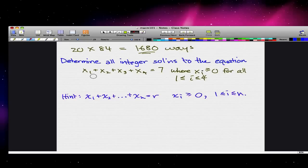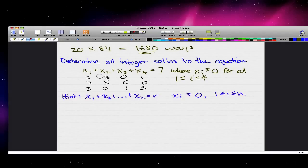For example, integer solutions could be solutions such as 3, 3, 0, and 1, or 2, 5, 0, and 0, or 3, 0, 1, 3. So what's the similarities between these three integer solutions? Well, they all add up to 7, but what's different about them is that their order is different, so the order actually matters here.